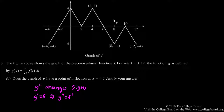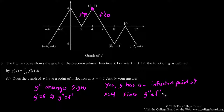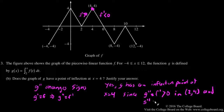Looking at x equals 4: f prime is greater than 0 in the interval 2 to 4 because f is increasing, and f prime is less than 0 in the interval 4 to 8 because f is decreasing. So yes, g has an inflection point at x equals 4, since g double prime equals f prime changes sign there.